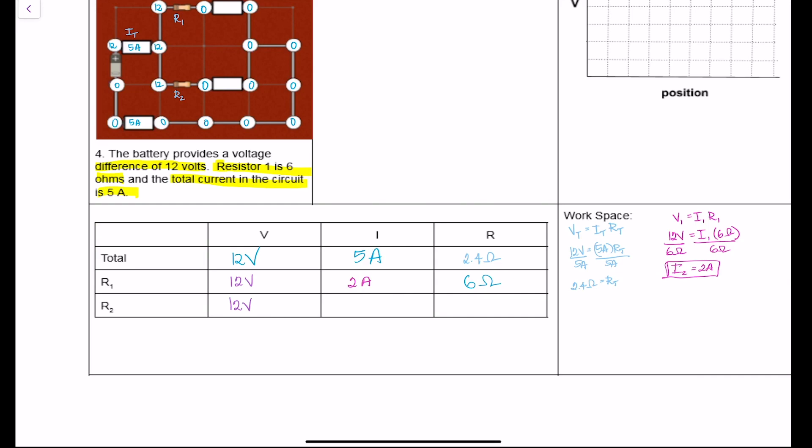Because we have the current for branch one plus the current of branch two is going to give us the total current. So we have 2A plus some unknown number is going to give us 5A, and so we know 2 plus 3 is going to make 5. So that's 3A, and then we know that 12 volts is equal to 3A times some number, and that number is going to be 4 ohms.